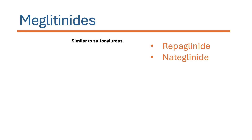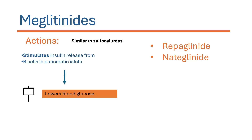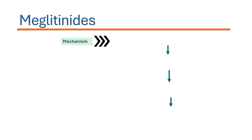Meglitinide actions are similar to that of the sulfonylureas — they are responsible for increasing insulin release. They stimulate insulin release from the beta cells of pancreatic islets, thereby lowering the blood glucose level.